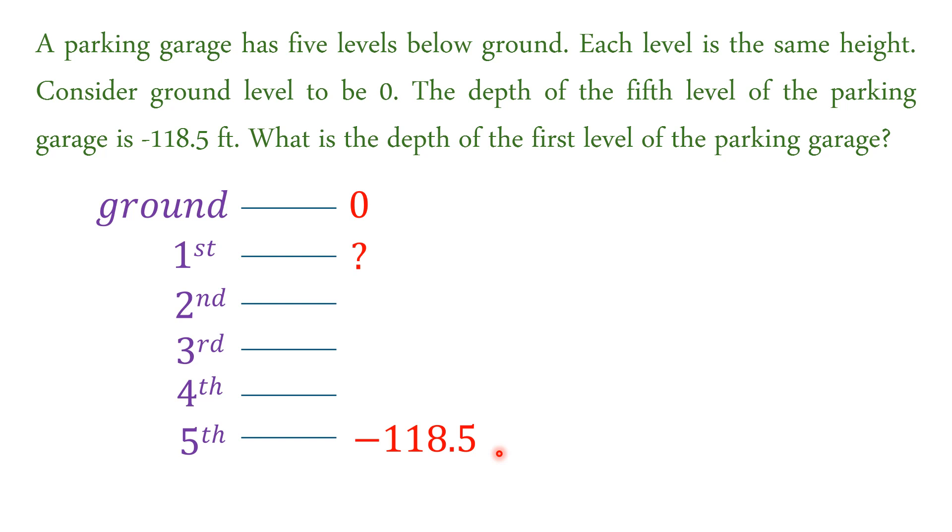So, to solve this, we are going to divide this negative 118.5 by 5, so that we will know what is the distance between each level. So, divided by 5, so it will be 23.7.